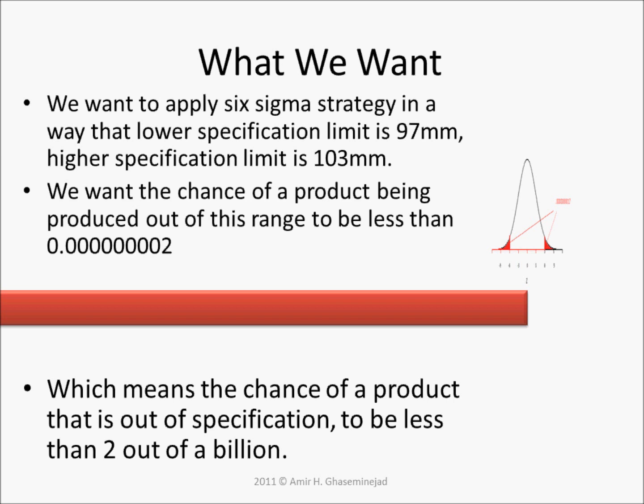We want the chance of a product being produced out of this range to be less than 0.00000002, which means that the chance of a product out of specification is less than 2 out of a billion.